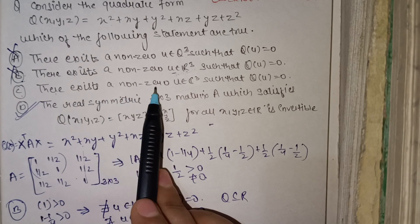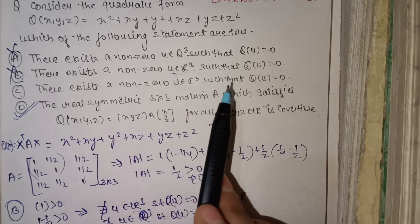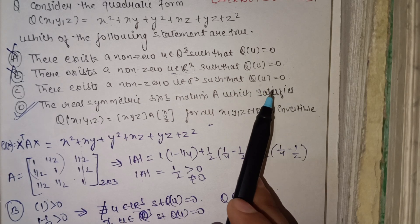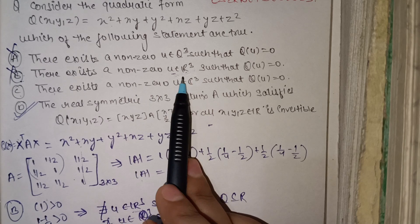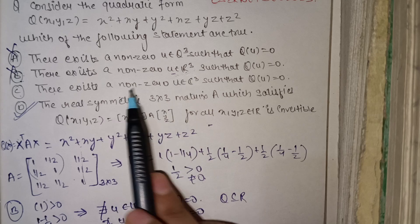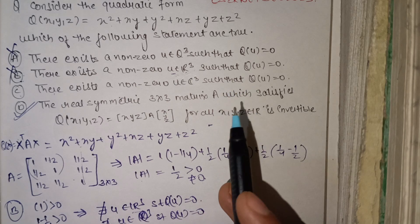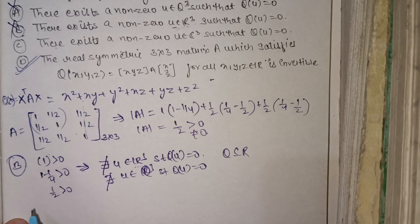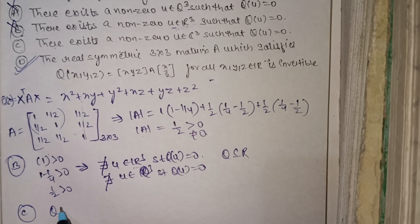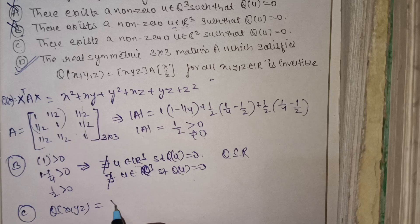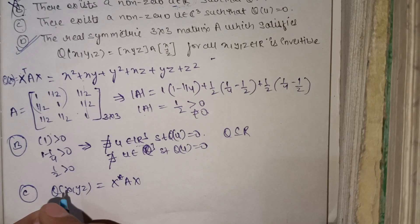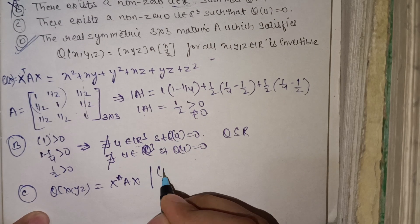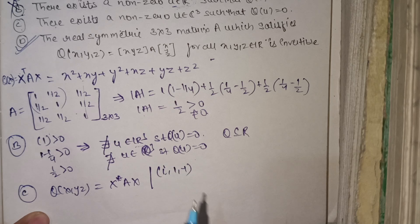Now for option C: there exists a non-zero u ∈ ℂ³ such that Q(u) = 0. Here Q over complex numbers is given by x̄ᵀAx. Let's try the example u = (i, 1, −1) and substitute into the quadratic form.